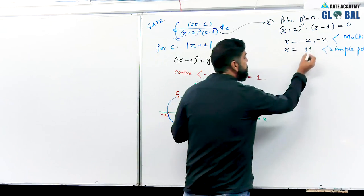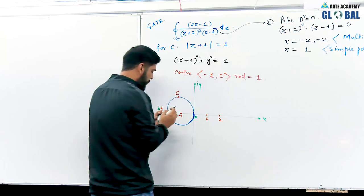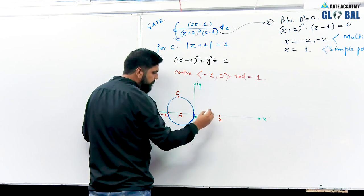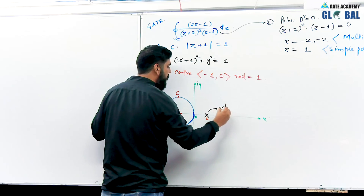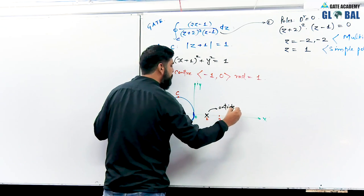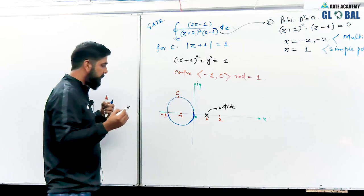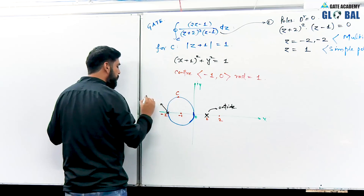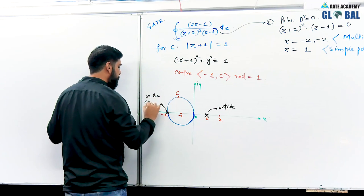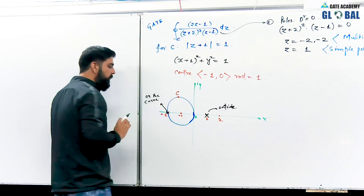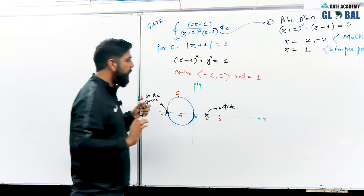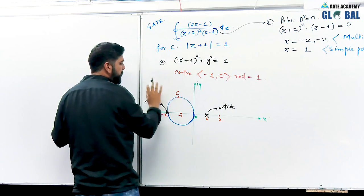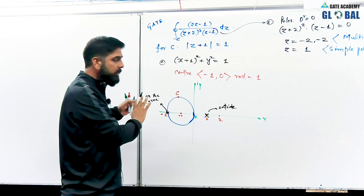Now we check the poles. The poles are at minus 2, minus 2, and 1. Pole at plus 1 is outside the curve — it is beyond the circle. Pole at minus 2 is on the curve — the circle passes through minus 2. So for the multiple pole at minus 2 which is on the curve, we apply the Cauchy integral formula for multiple poles.